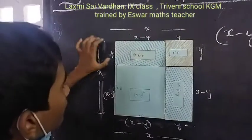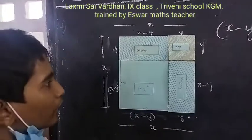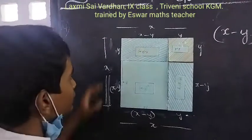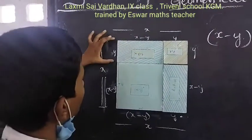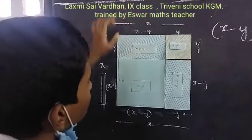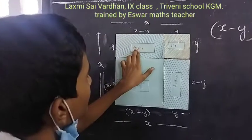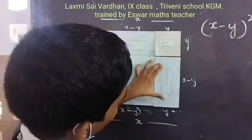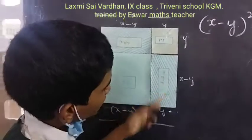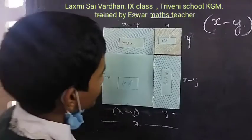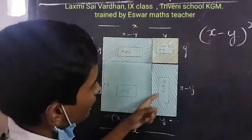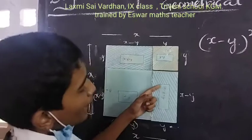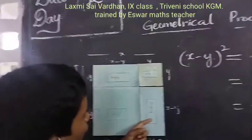Y. We know that area of the rectangle equal to length into breadth. So, breadth equal to Y, length equal to X minus Y. So, the area will be X minus Y into Y. And as same as this rectangle, area of this rectangle equal to X minus Y into Y.